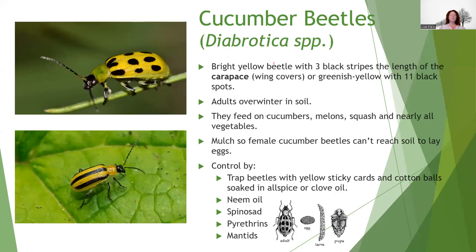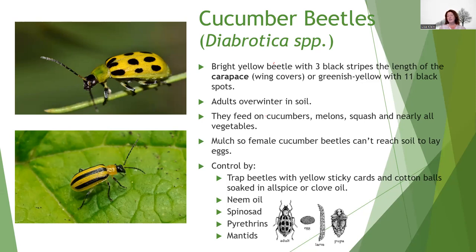Cucumber beetles are a really bright yellow beetle with three black stripes on the carapace — the wing covers on the back of the beetle. There's a spotted version and a striped version. The adults overwinter in soil, so mulch can be your friend — you can disturb the soil to expose them to the elements. They'll feed on cucumbers, melons, squash, and pretty much all vegetables. You can use sticky yellow traps as a monitoring tool. Try essential oils like allspice or clove oil to repel them, as well as neem oil, spinosad, and pyrethrins. You can also try to attract mantids to your garden.